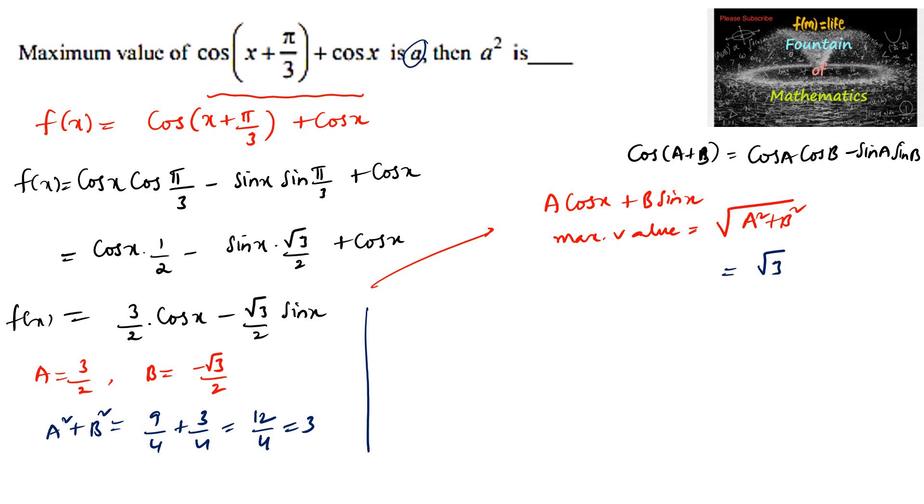It is given maximum value is a, so a is equal to √3. Therefore a² is equal to 3. The answer is 3.